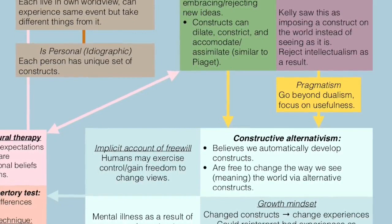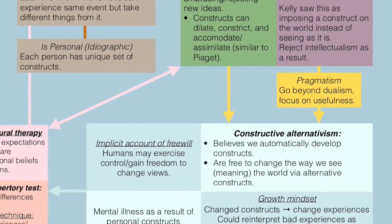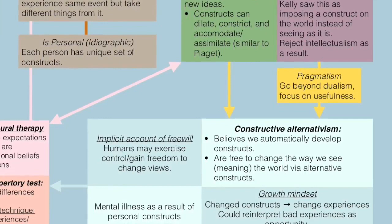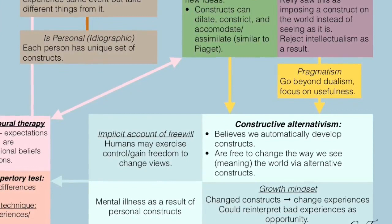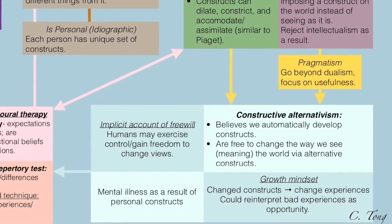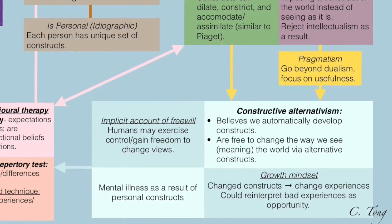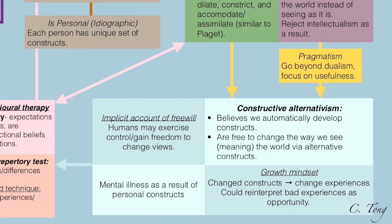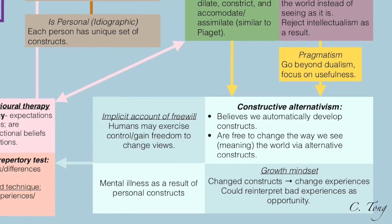Constructive alternativism had an implicit account of free will whereby humans may exercise control or gain freedom through simply changing their views. Mental illness was a result of faulty personal constructs, according to Kelly. Constructive alternativism thus had a growth mindset in which one changed their constructs by changing experiences or by changing how they perceived experiences, and through reinterpreting bad experiences as opportunities, individuals could overcome their issues.